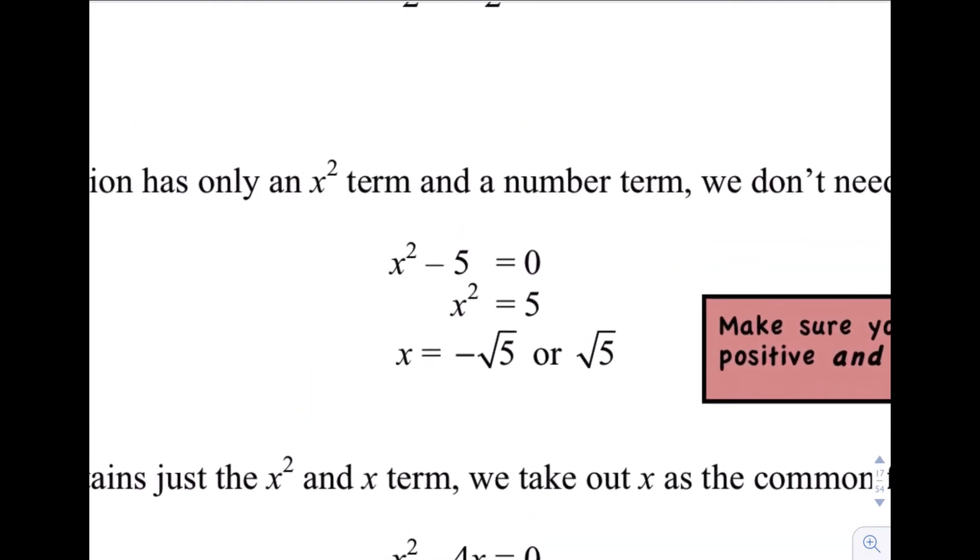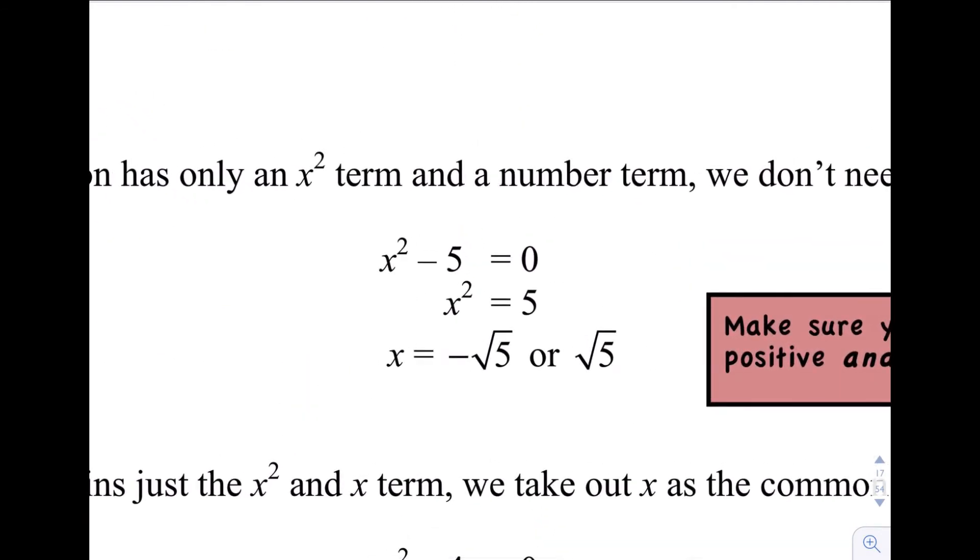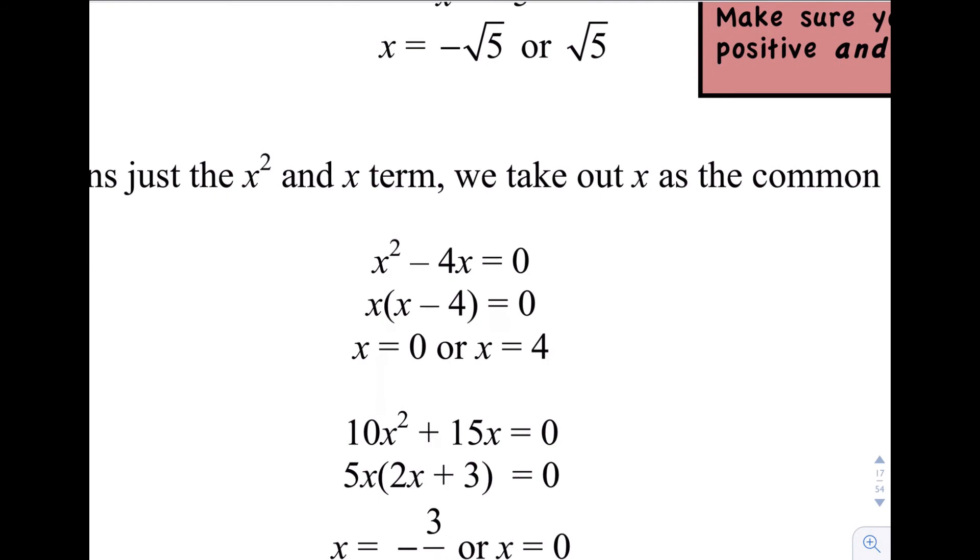Sometimes you might only have two terms. So x squared minus 5 equals 0. So we don't have the x term. Easiest way to do that is just add the 5 to both sides and then take the square root of both sides. Remembering that when we take the square root of both sides, you need the positive and the negative root. If we've just got the x squared term and the x term and no number term, then we've just got a common factor of x. And that's what I've done from here to here. Let's take out a common factor of x. And then we can say, well, what value of x makes that 0? Well, that's just 0. What value of x makes this 0? The answer is 4. So 0 or 4.